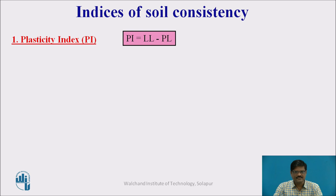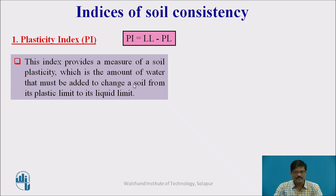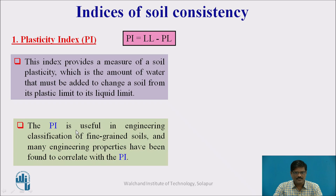The first index is the plasticity index, which is briefly denoted by PI. Plasticity index is given by liquid limit minus plastic limit — so LL means liquid limit and PL means plastic limit. This index provides a measure of soil plasticity, which is the amount of water that must be added to change a soil from its plastic limit to its liquid limit.